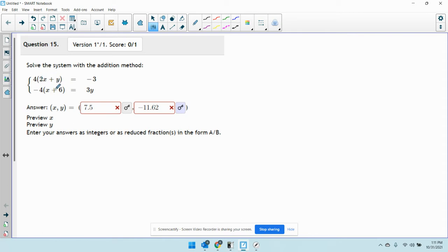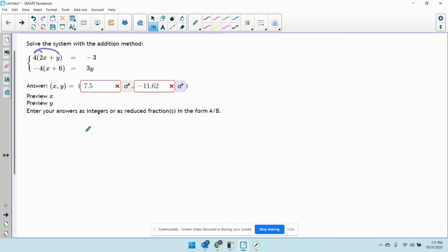Before I do anything, I want to get rid of these parentheses. I don't like working with them. So I'm going to start by distributing through both equations to get rid of them. I'll rewrite that first one down below. 4 times 2x is 8x plus 4 times y equals negative 3.